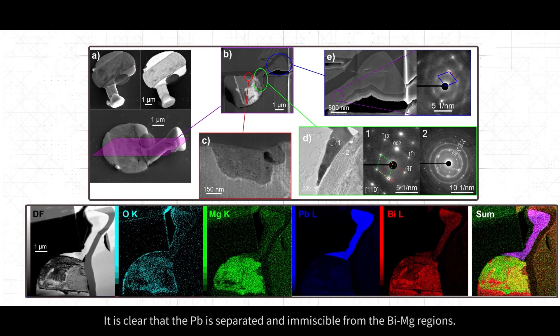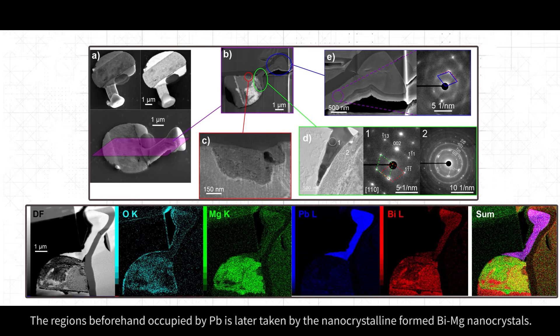It is clear that the lead is separated and immiscible from the bismuth-magnesium regions. The regions beforehand occupied by lead are later taken by the nanocrystalline-formed bismuth-magnesium nanocrystals.